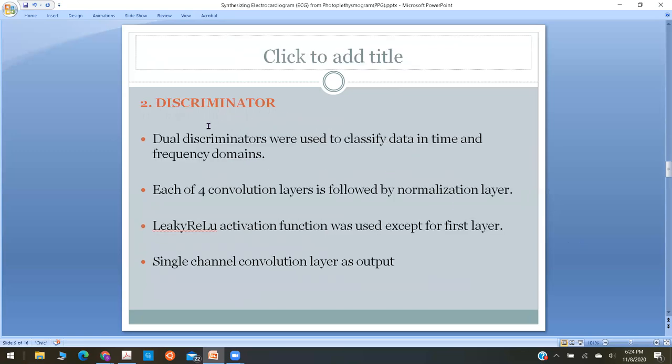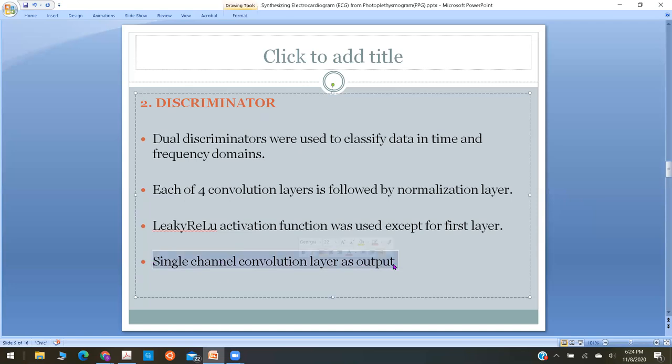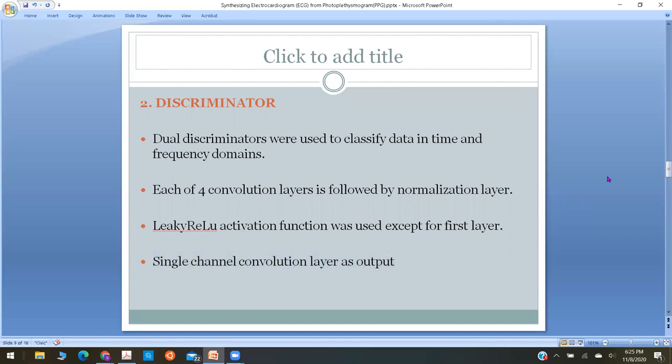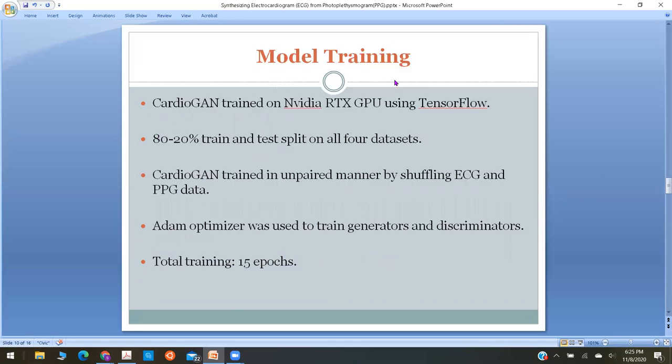The discriminator component: there are two discriminators. One had to classify time and the other one had to classify frequency. There were four convolutional layers, which were followed by a normalization layer. Min-max normalization was applied. As we know, the end output of the signal was a single channel. In order to output a single channel, there had to be convolution at each layer.